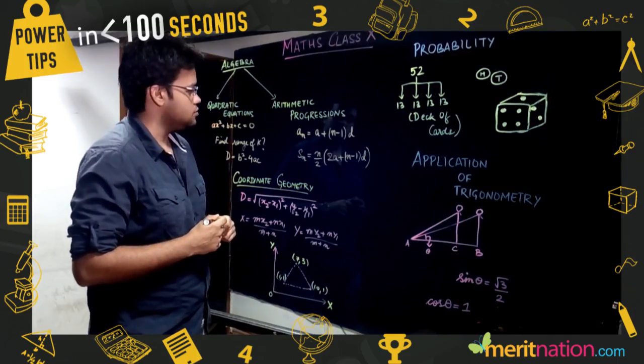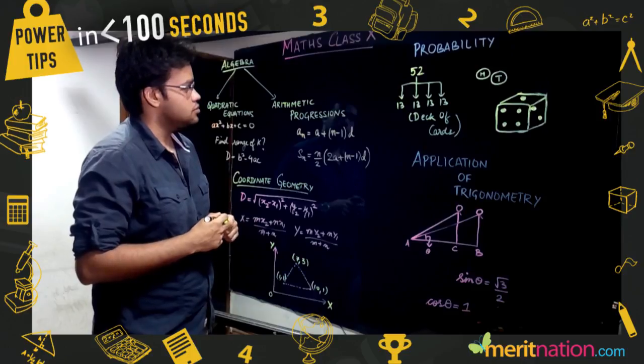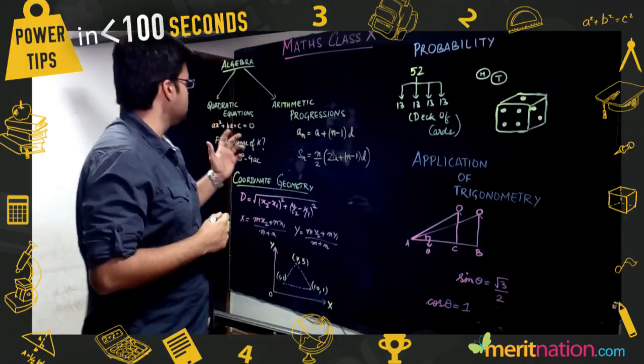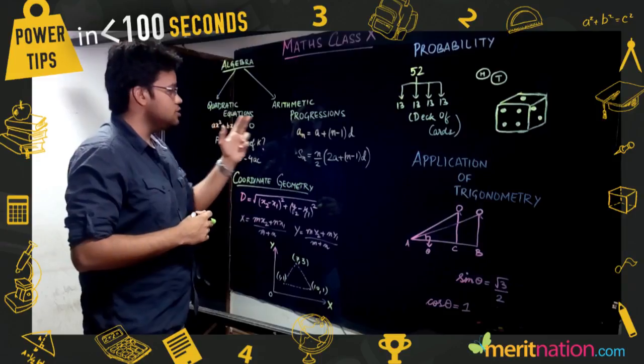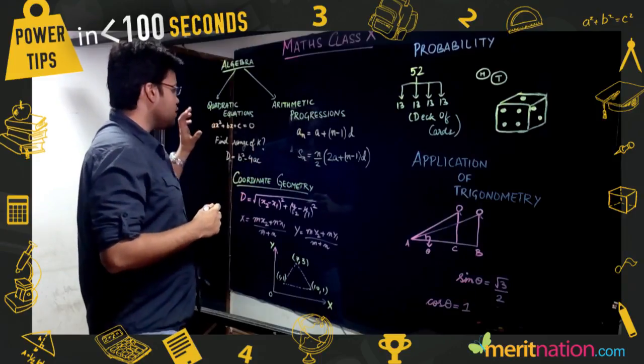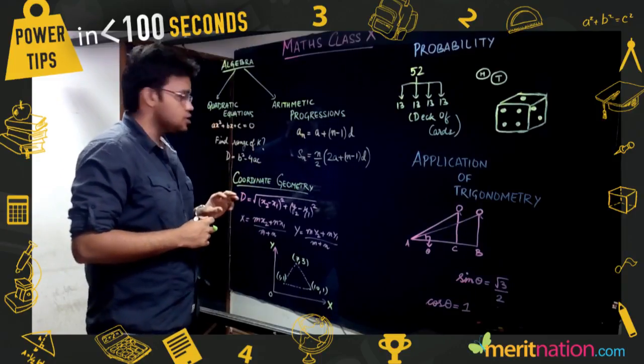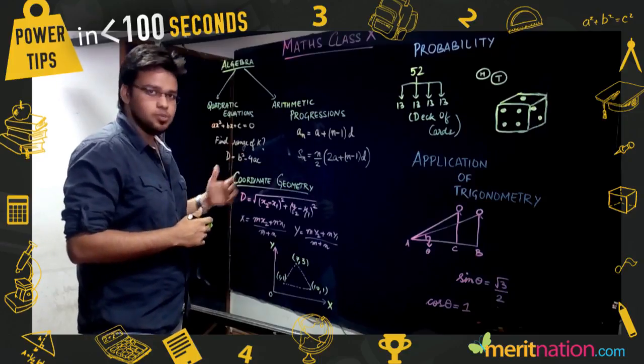Starting with Algebra, it has two chapters: Quadratic Equations and Arithmetic Progressions. In Quadratic Equations, three specific types of questions are asked. First, solving the quadratic equations by different methods.